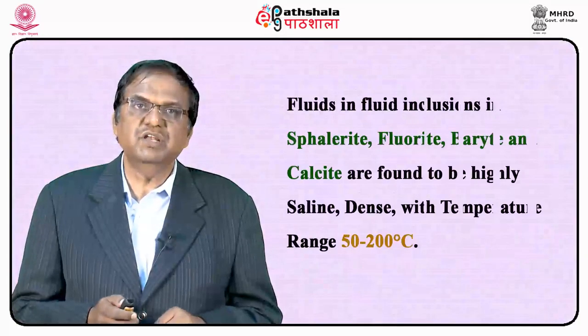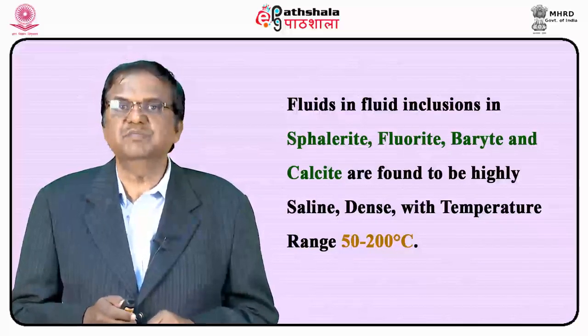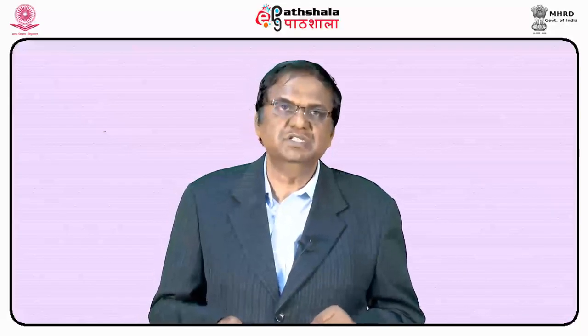The deposits tend to be rich in zinc and extremely poor in copper. Fluids in fluid inclusions in sphalerite, fluorite, barite, and calcite are found to be highly saline, dense, with temperature range 50 to 200°C. In fluid inclusions, oil and/or methane is often present. These features are strikingly similar to pore fluids in present-day sedimentary basins. Lead from various Mississippi Valley fields is notably enriched in radiogenic lead, suggesting derivation from a crustal source high in uranium and thorium — highly probably the Precambrian basement.